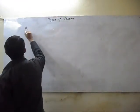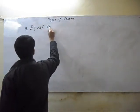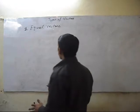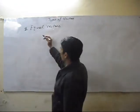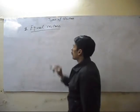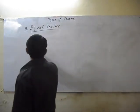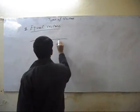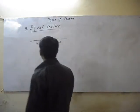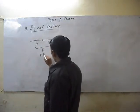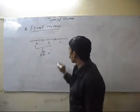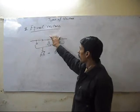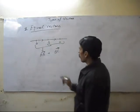Second type is equal vectors. If two vectors have the same direction and equal distance, then they will be called equal vectors. Suppose points A, B, C — vector AB will be equal to vector BC because both directions are to the right side with equal distance.